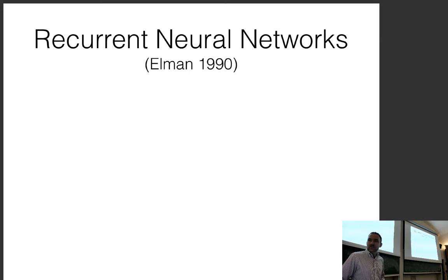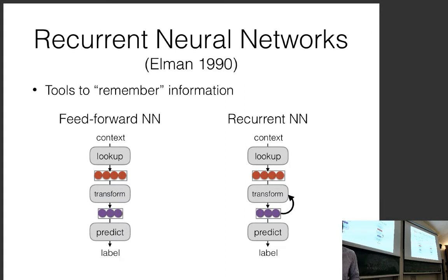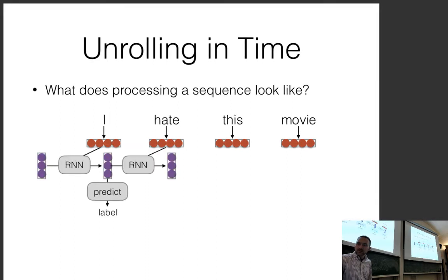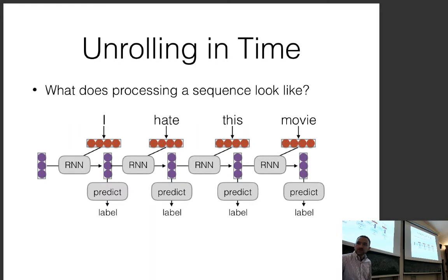Recurrent neural networks are tools to remember information. Instead of doing a transform of the input itself, an RNN does a transform of the input given the previous transform made. Once unrolled in time, there are no cycles — it's just a very deep feedforward neural network that changes in size but is still a standard feedforward neural network with no cycles. So you can still represent it as a directed acyclic computation graph.